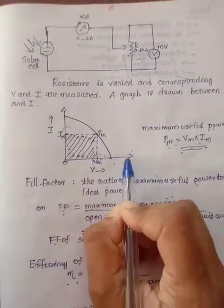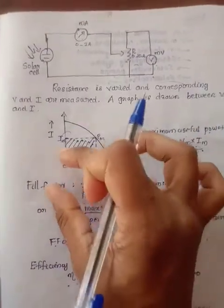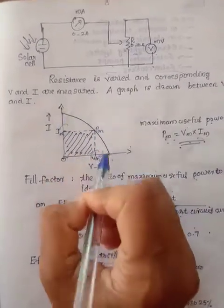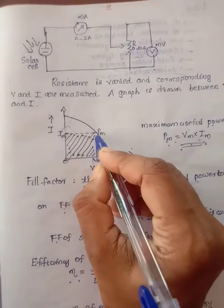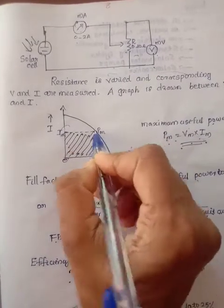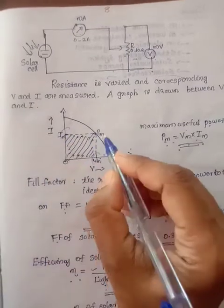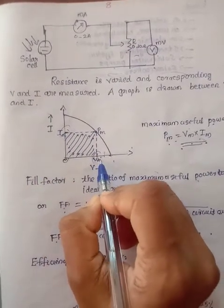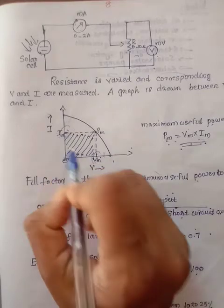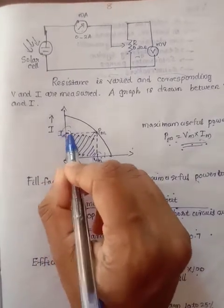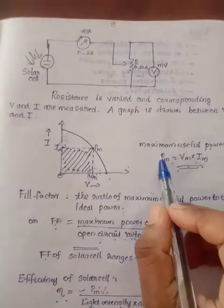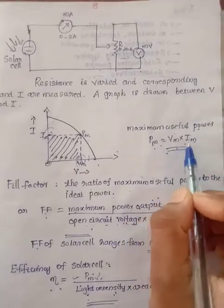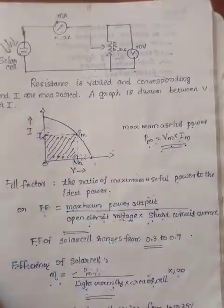Voltage is plotted along the x-axis and current along the y-axis. We plot the curve and take the center point of the curve. The maximum voltage is Vm and the maximum current is Im. So, maximum power is equal to Vm multiplied by Im. We will obtain the maximum current from this graph.